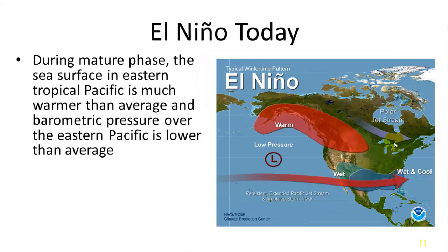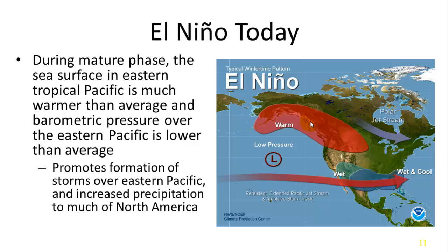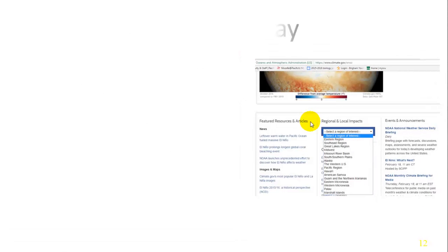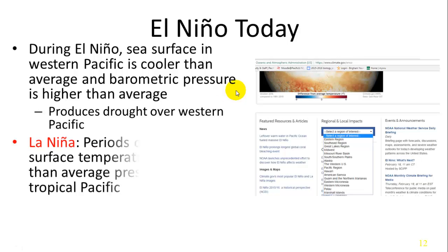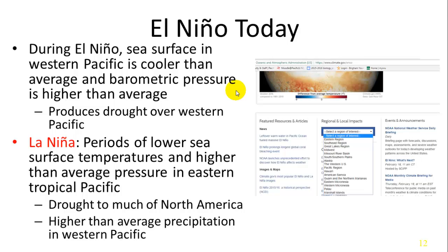During El Niño years in the mature phase, the sea surface in the eastern tropical Pacific is much warmer on average and barometric pressure is lower than average, promoting storms across much of the United States — making those areas wetter while areas to the north become warmer and drier. Meanwhile, the western Pacific sees cooler sea surface temperatures and higher pressure, producing drought. La Niña represents the opposite: lower sea surface temperatures and higher pressure in the eastern tropical Pacific, causing drought across much of North America and higher precipitation in the western Pacific.